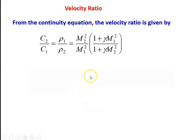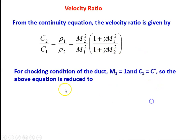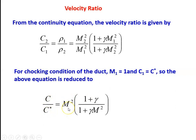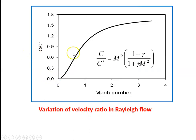The next property is the velocity ratio. From the continuity equation, the velocity ratio C₂/C₁ = ρ₁/ρ₂ = (M₂²/M₁²) × (1 + γM₁²) / (1 + γM₂²). For the choking condition of the duct, we substitute M₂ = 1, so C₁ becomes C*. The equation is reduced to C/C* = M² × (1 + γ) / (1 + γM²). This shows how velocity changes with respect to Mach number for γ = 1.4.